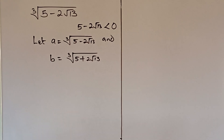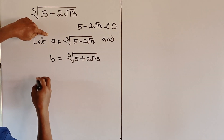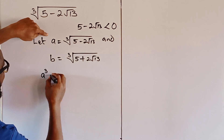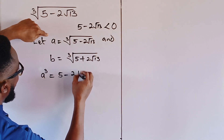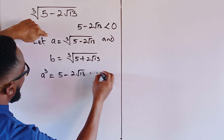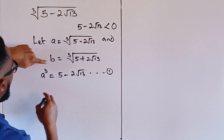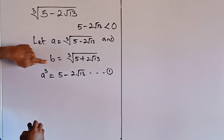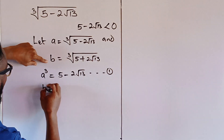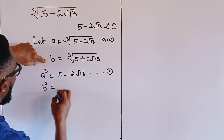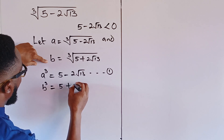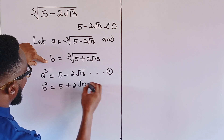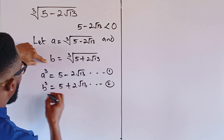If we take the cube on both sides of these two expressions: for the first, we get A cubed equal to 5 minus 2 radical 13 — this is equation 1. For the second, B cubed equal to 5 plus 2 radical 13 — this is equation 2.